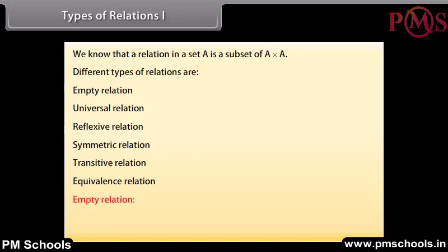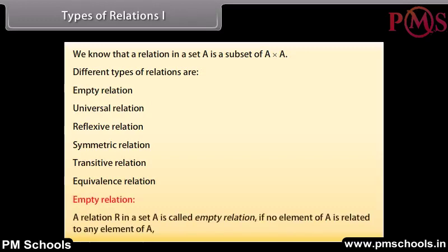Empty relation: A relation R in a set A is called empty relation if no element of A is related to any element of A. That is, R is a subset of A cross A equal to the empty set.